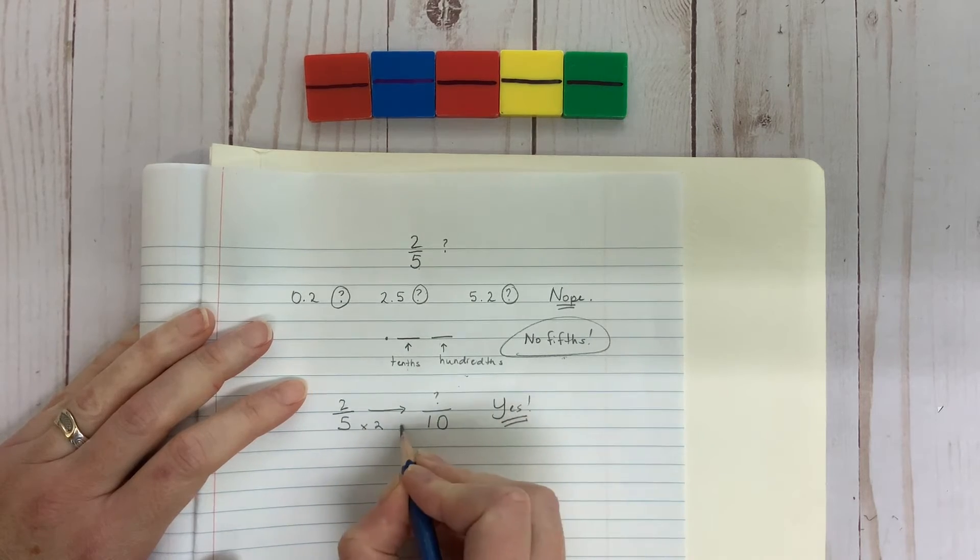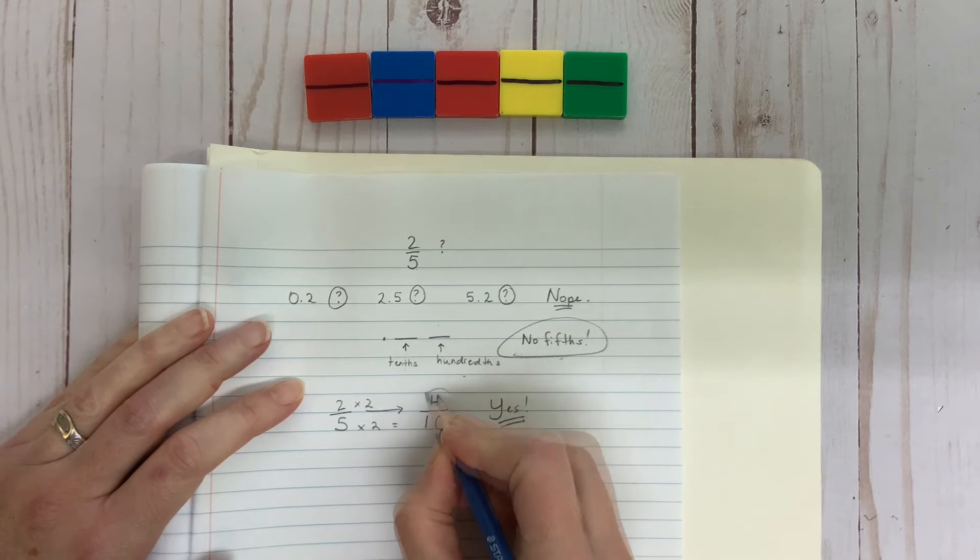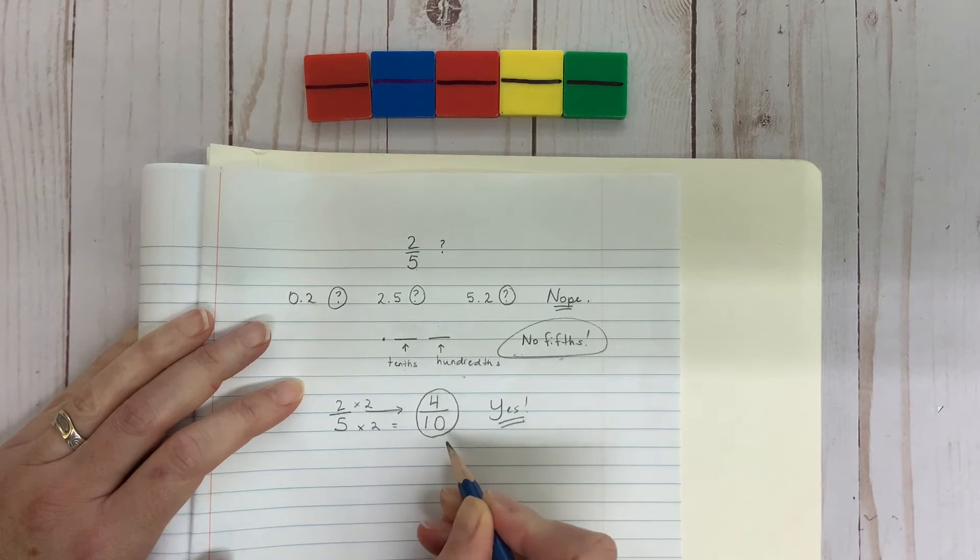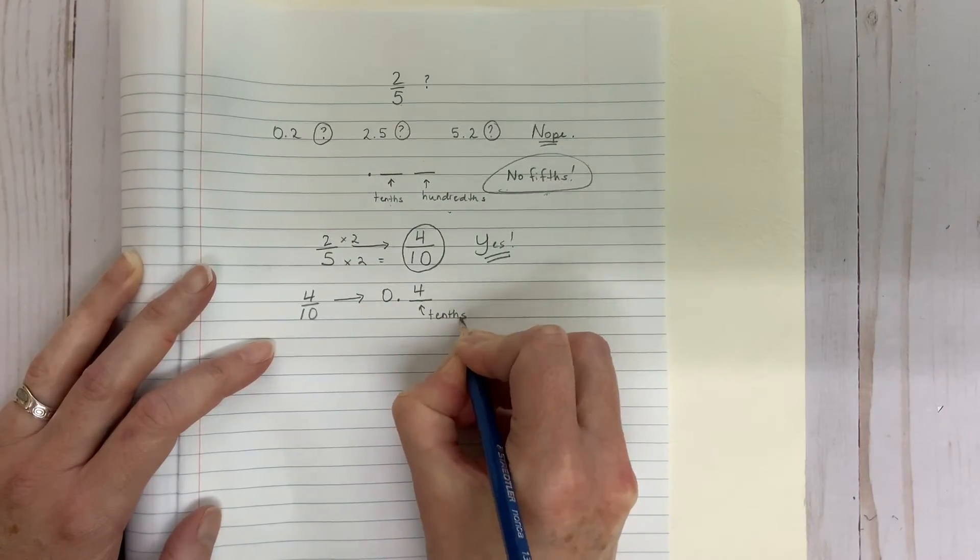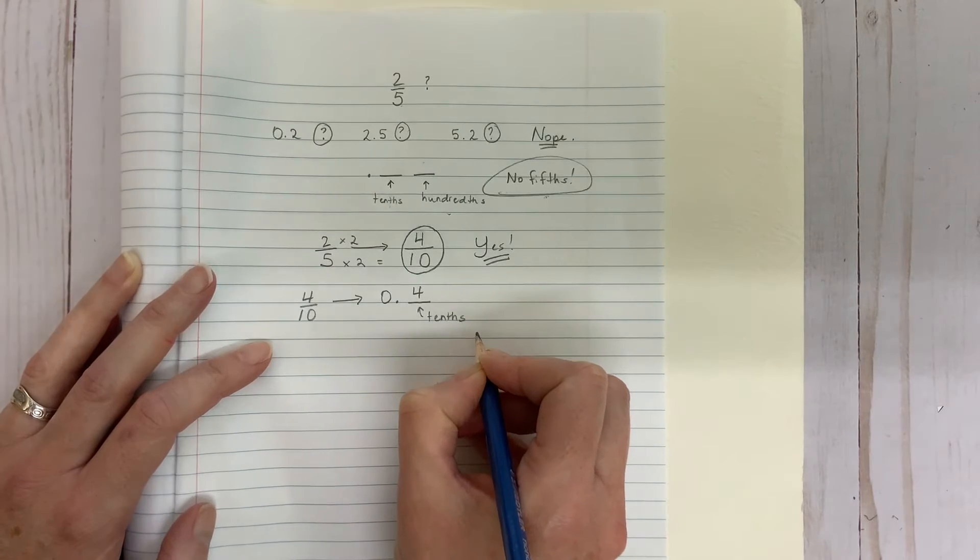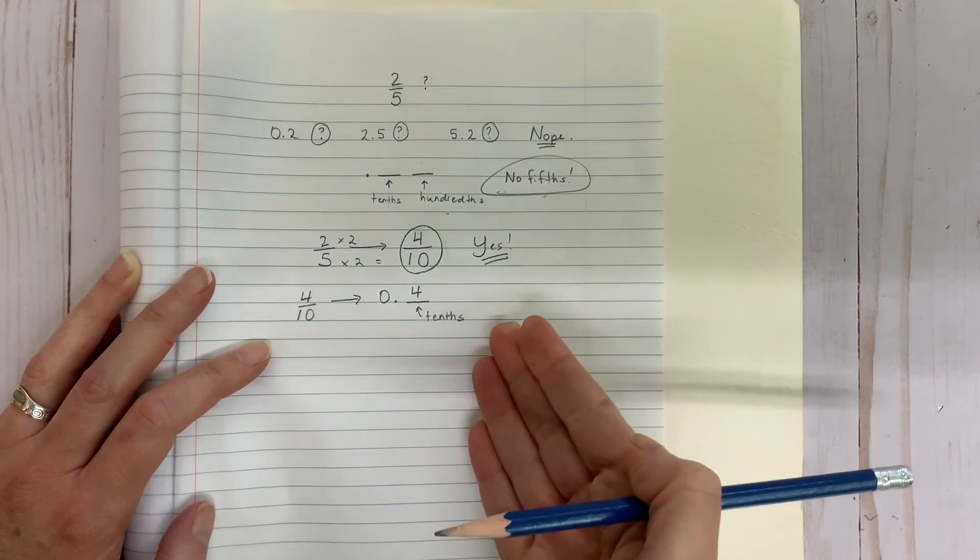Ten is double five. That means the portion that is red has also doubled. Our new equivalent fraction? That's right. Four tenths. Our new fraction now can be easily written as a decimal. The four goes in the tenths place. Zero point four. Remember that the denominator stays hidden when you're recording with decimals.